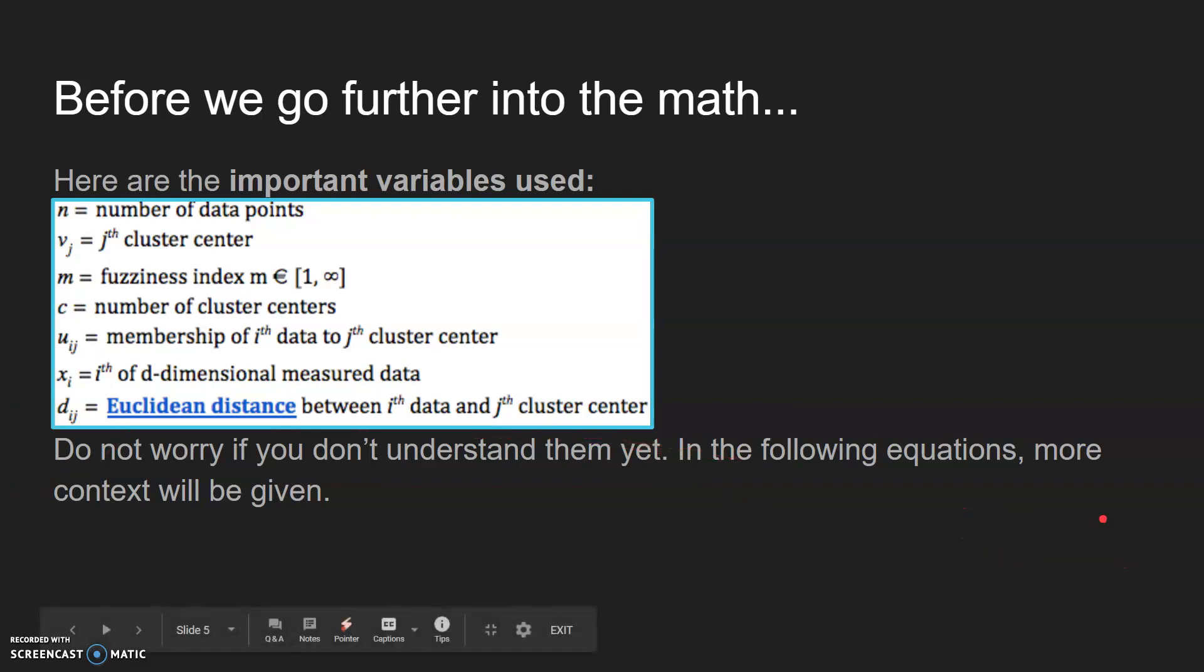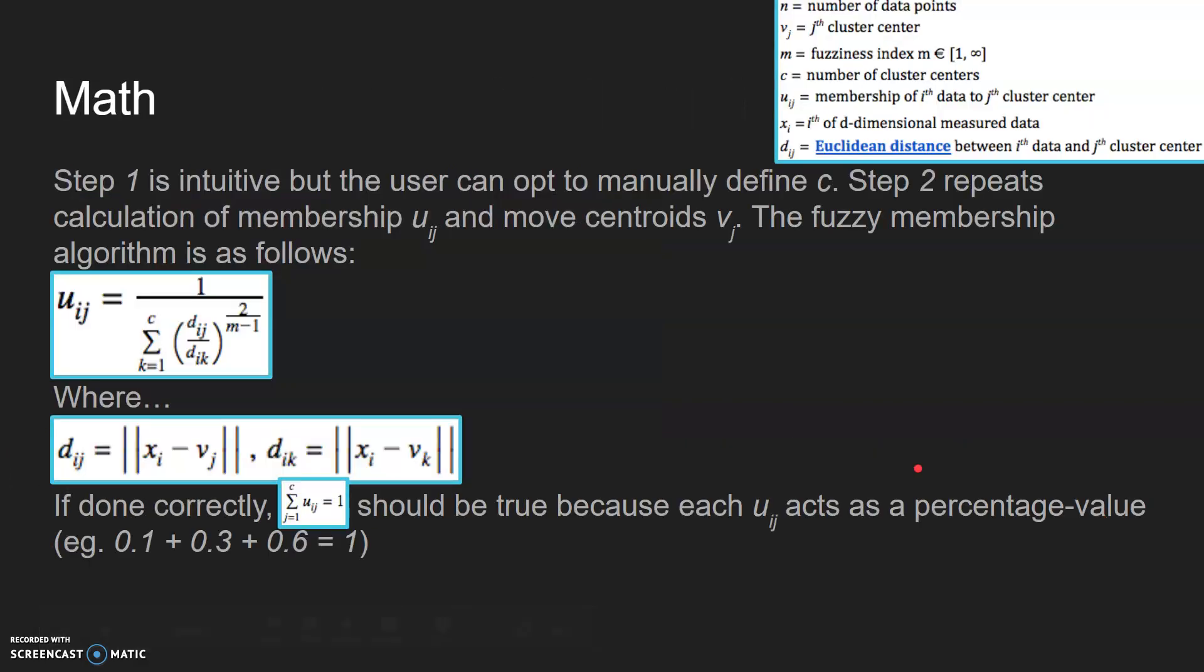Don't worry if you don't understand because the following equations will give a lot more context. You can see on the top all the variables. In step one, it's pretty intuitive. C, which is the number of data points, can be defined by the user but sometimes can be randomized.